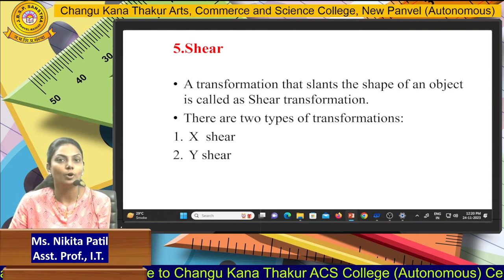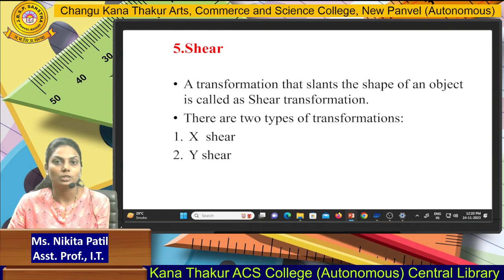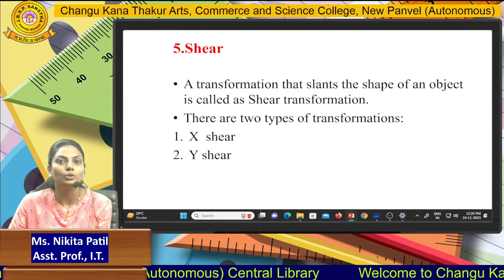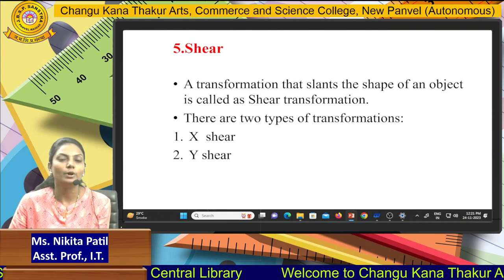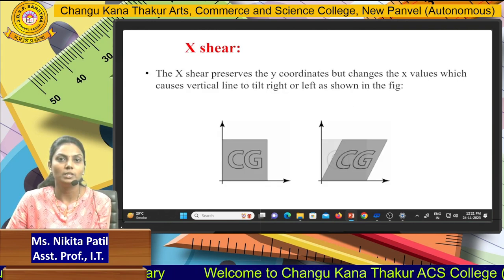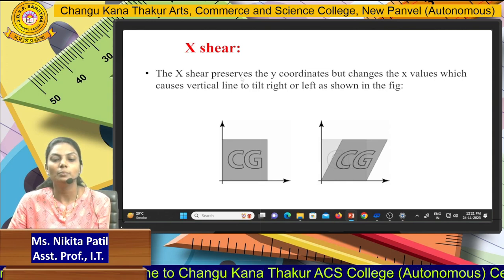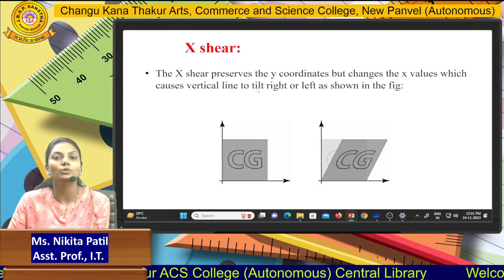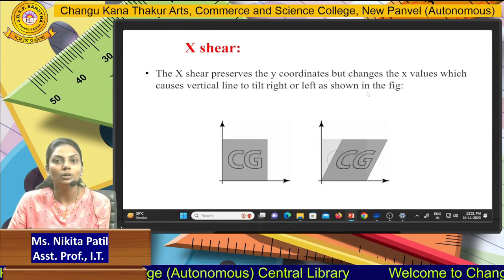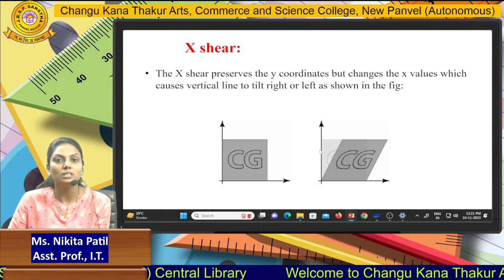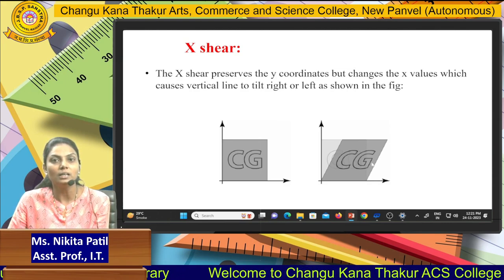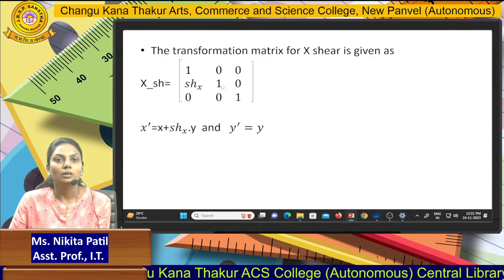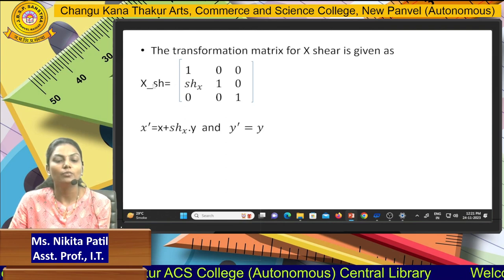Next is shearing. A transformation that slants the shape of an object is called a shear transformation. There are two types: x-shear and y-shear. With x-shear you shear the x-axis image, and with y-shear you shear the y-axis image. X-shear keeps the y coordinates constant but changes the x values, which causes vertical lines to tilt left or right as shown in the figure.